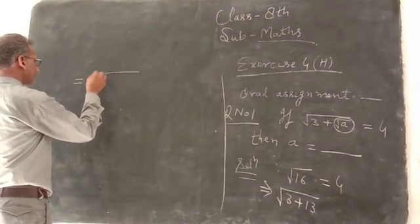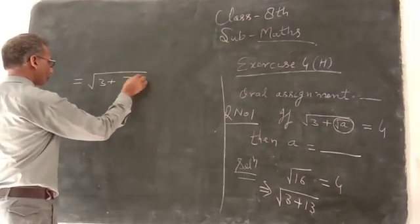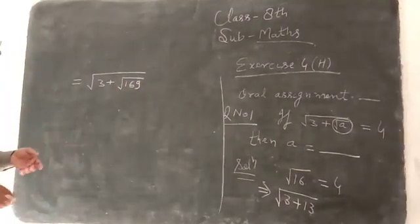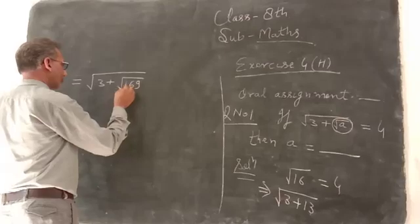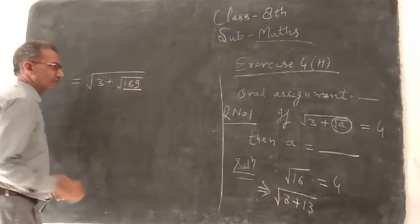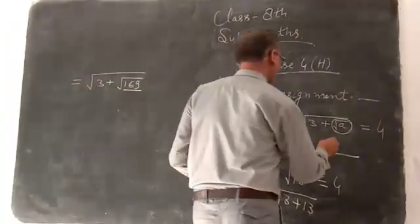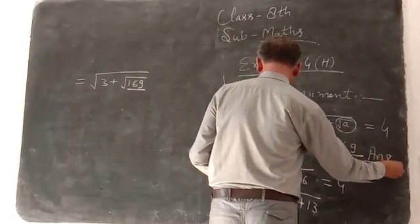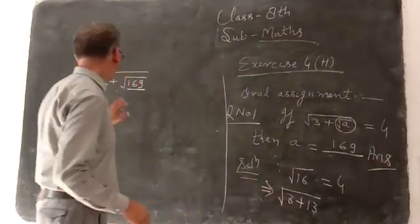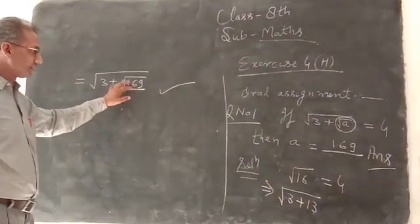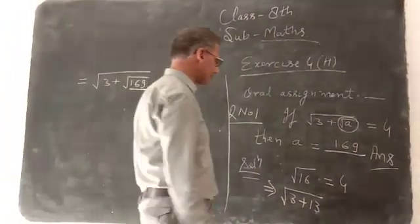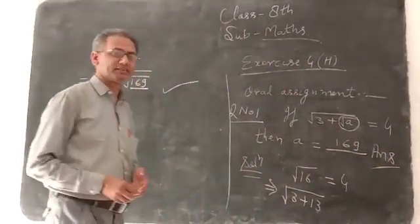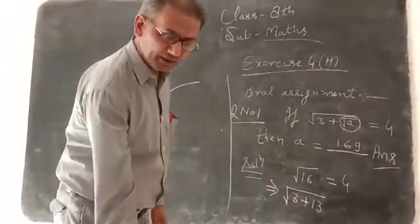Root 3 plus root 169. This is equal to root 169. This is a sense of awareness you can see. The such questions also depend on thinking. Your thinking depends on how you feel.